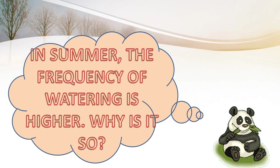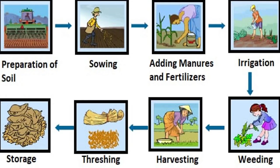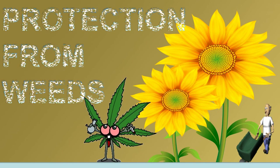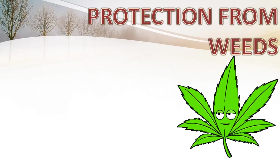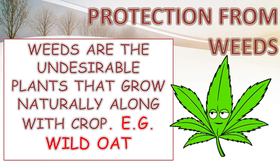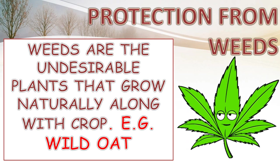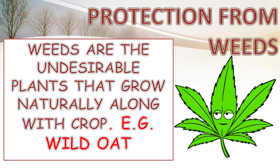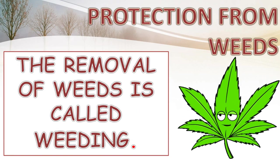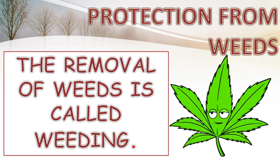Do you know: in summer, the frequency of watering is higher. Why is it so? Let's see the next agricultural practice — protection from weeds. Weeds are the undesirable plants that grow naturally along with the crop. For example, wild oat. The removal of weeds is called weeding.